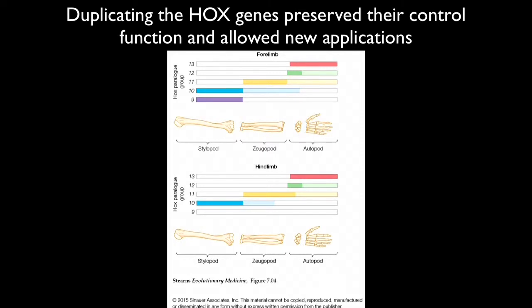Duplicating this set of genes preserved their control function and allowed new applications. In the lineage leading up to vertebrates, the Hox gene complex was duplicated twice along with the whole genome — we have had two duplication events of our genome. We can see both in the forelimb and the hind limb that Hox genes 9, 10, 11, 12, and 13 are controlling limb structure.